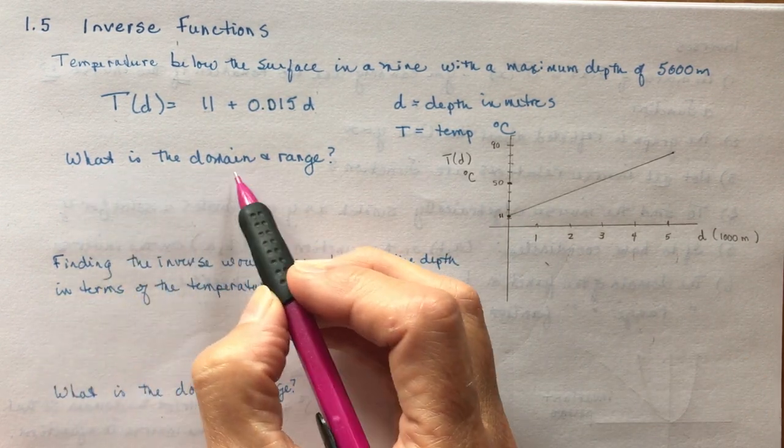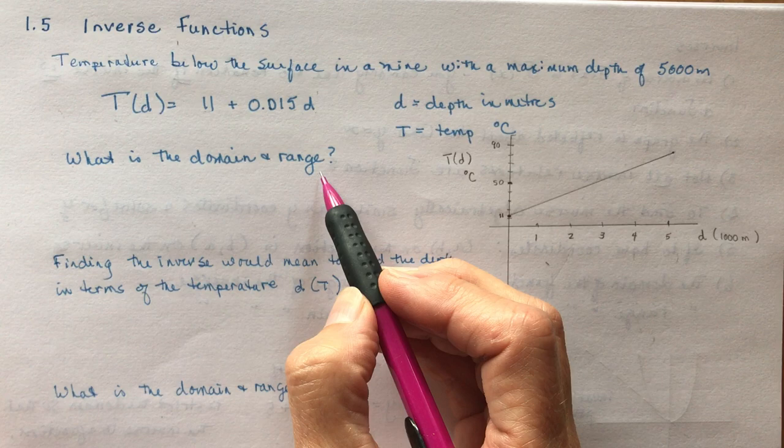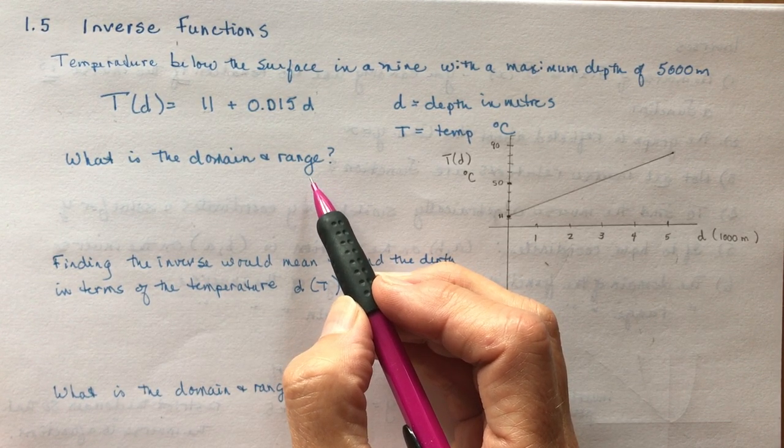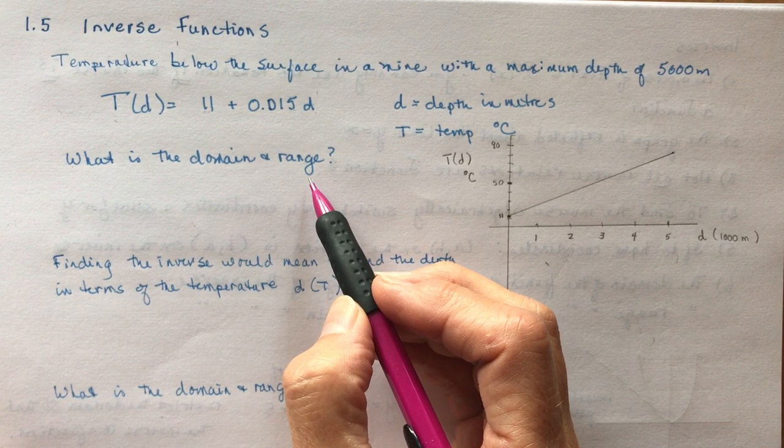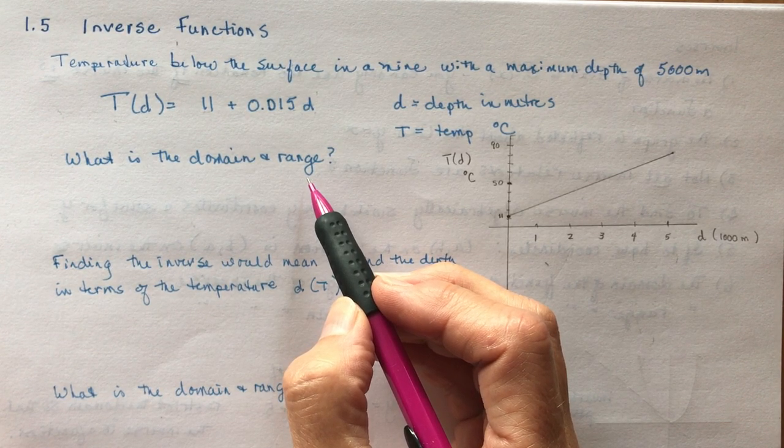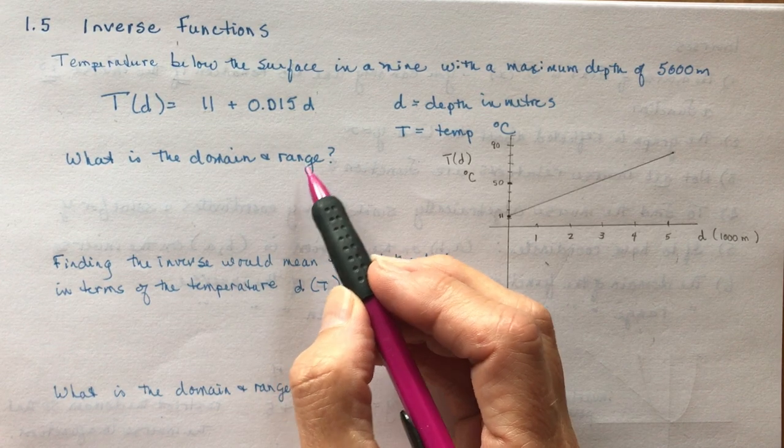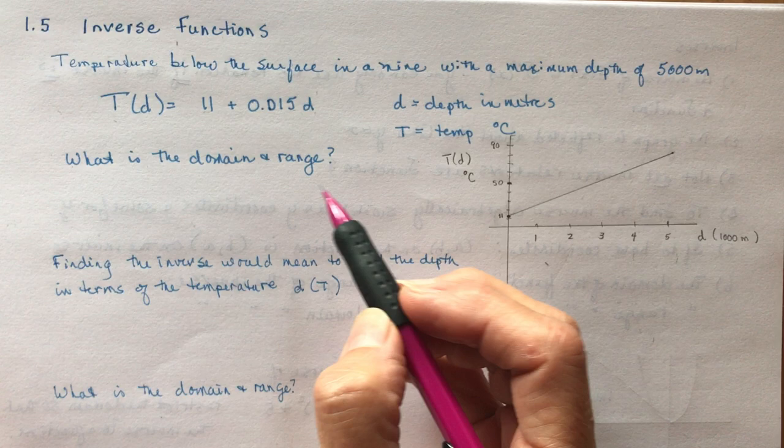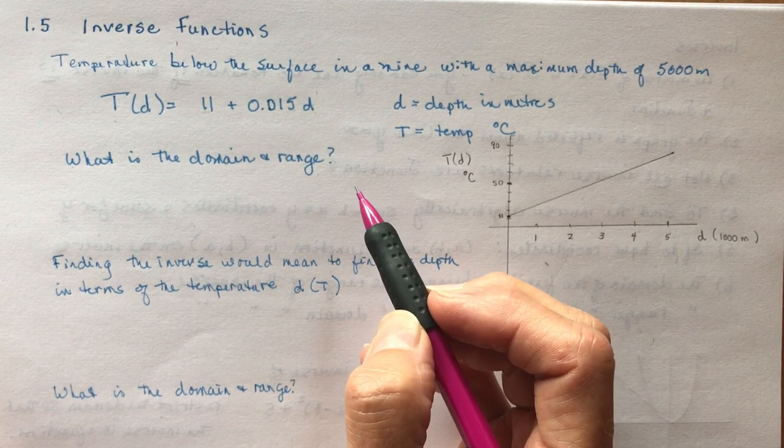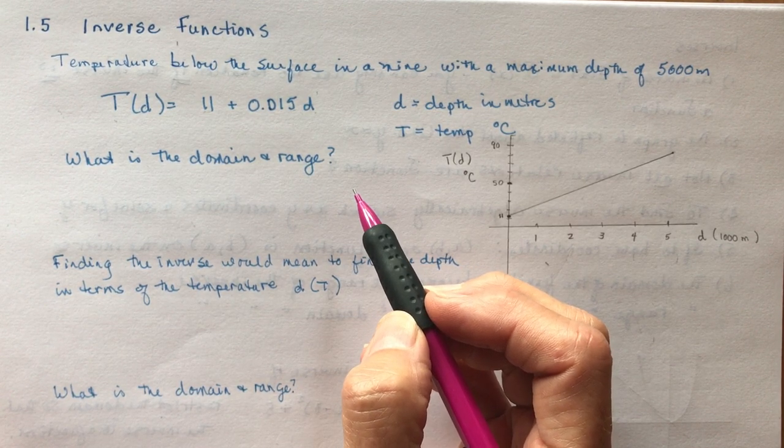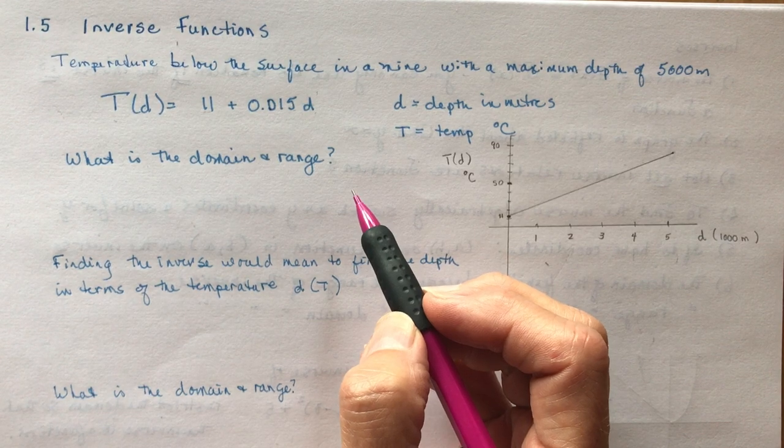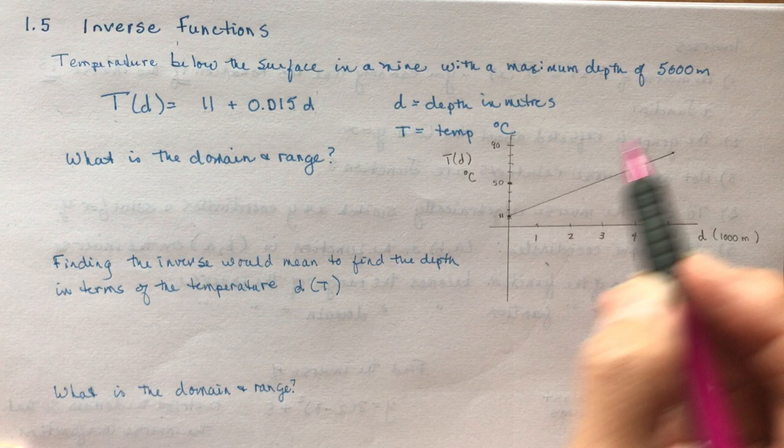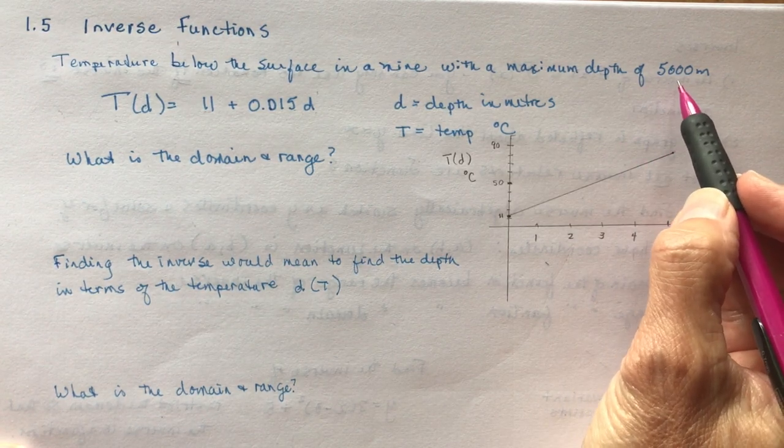The question asks you what is the domain and range of this function. With most word problems, they usually have a restriction on the domain. For instance, back in grade 10 when you were doing quadratics and you threw a ball, it went into the air and then hit the ground. Once it hit the ground the story was over, so that would have been your domain. Let's say the ball ended after three seconds, so your domain would be from zero to three.